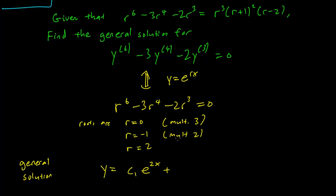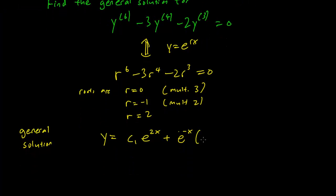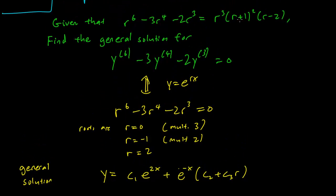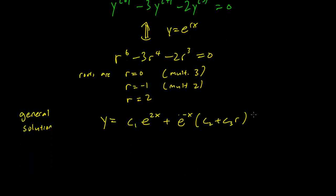the root of multiplicity 2 will have an e^(-x) but we have a C2 and a C3x because there are two multiplicities here. It's a double root. Double root means that this R plus 1 thing has a square in it and the third